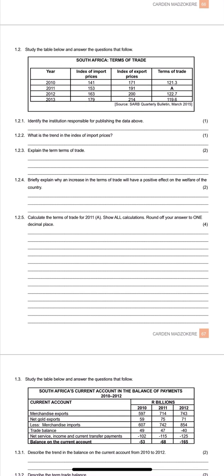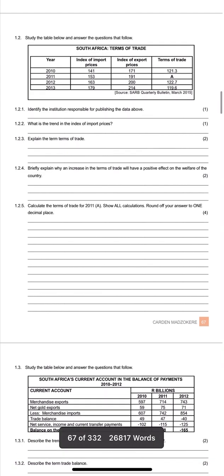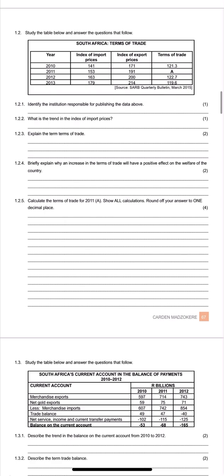Like I mentioned, you need to learn the formula for calculating trade balance. One way you can test it: try 171 divided by 141 times 100. If you don't get 121.3, then it's the other way around.